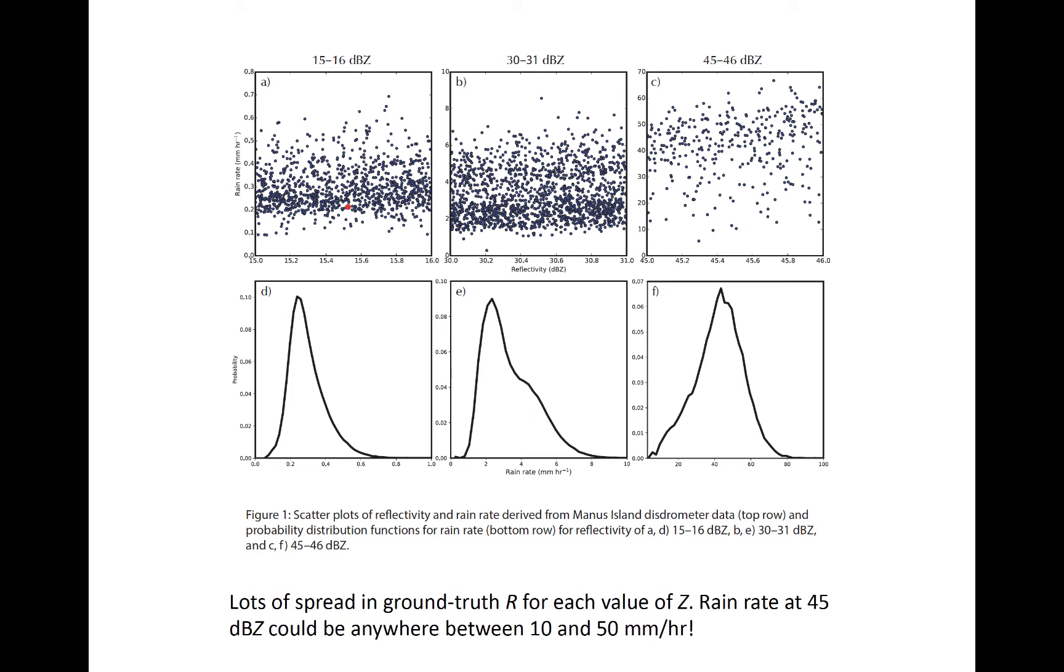Each PDF peaks along the y-axis at the most likely rain rate listed on the x-axis. So for example, this PDF peaks at a little over 0.2, which is where most of the points are clustered in the top left panel.